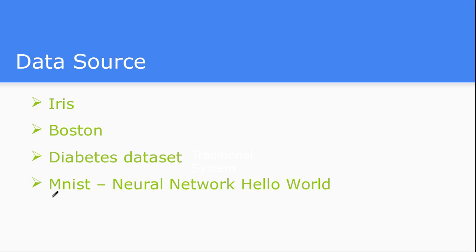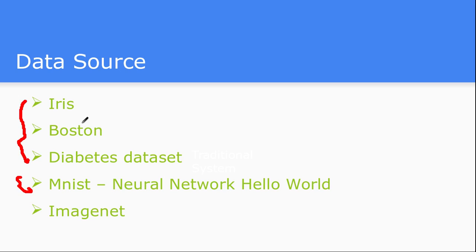There is a very famous neural network data source where handwritten characters have been generated by the machine learning community — people call it the 'Hello World' of neural networks. There is also the very famous ImageNet dataset, which has approximately 1.2 to 1.4 million images, each tagged across around a thousand classes. We will see all of these databases in future videos, download them, and put them into our local repository for classification or regression algorithms.